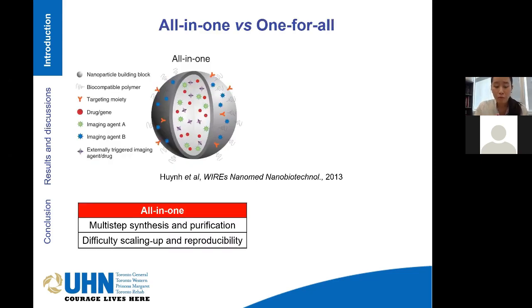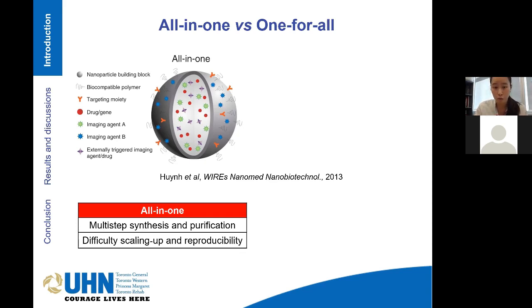However, this strategy has its own downfall. The nature of all-in-one nanoparticles often requires multi-step synthesis, and that can lead to more complex purification and, as a result, you can get a more heterogeneous population. That can significantly increase the difficulty for scaling up and make these nanoparticles harder to reproduce.